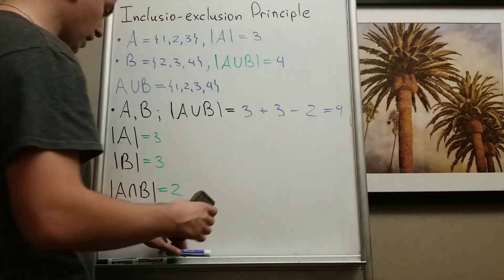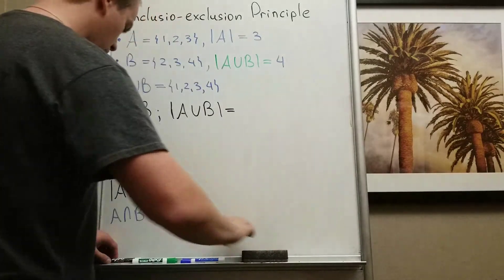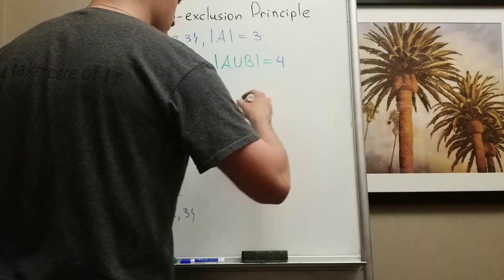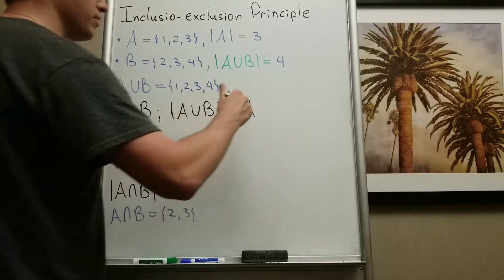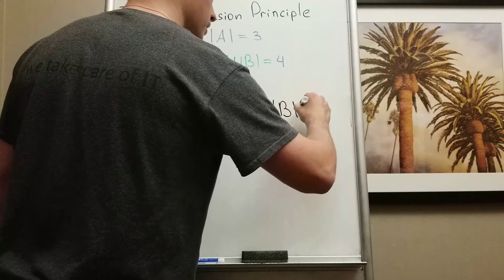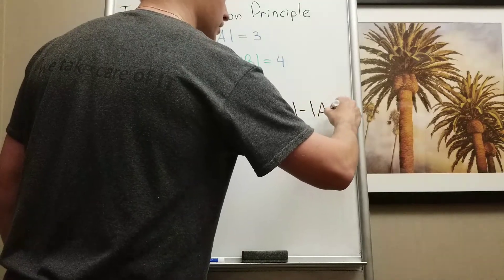But let's write instead of numbers our actual cardinality of our sets. So we're claiming that the cardinality of A union B is cardinality of A plus cardinality of B minus cardinality of A intersection B.